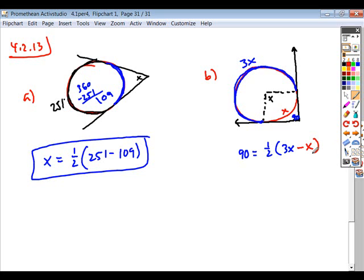So we're going to take the difference of 3X and X, divide by 2, multiply by 90. And so when you look at this, if you multiply both sides by 2 to get rid of your half, you get 180 is equal to 3X minus X, which is 2X, divide by 2. And you get your solution for X. It's 90 degrees.